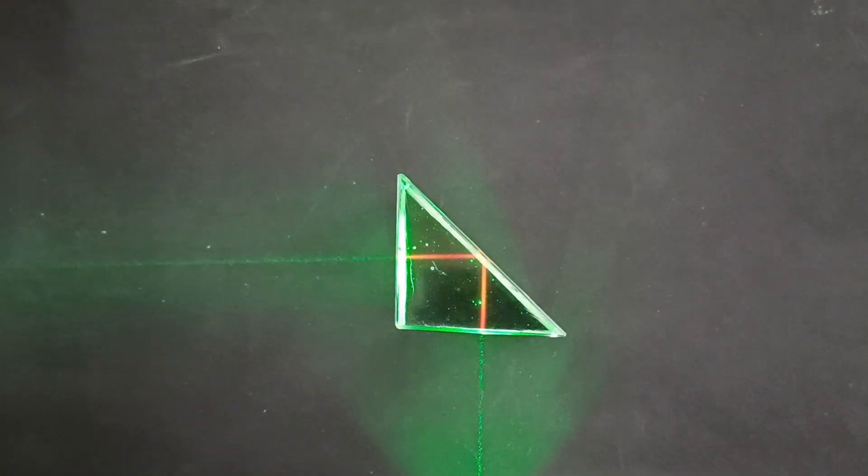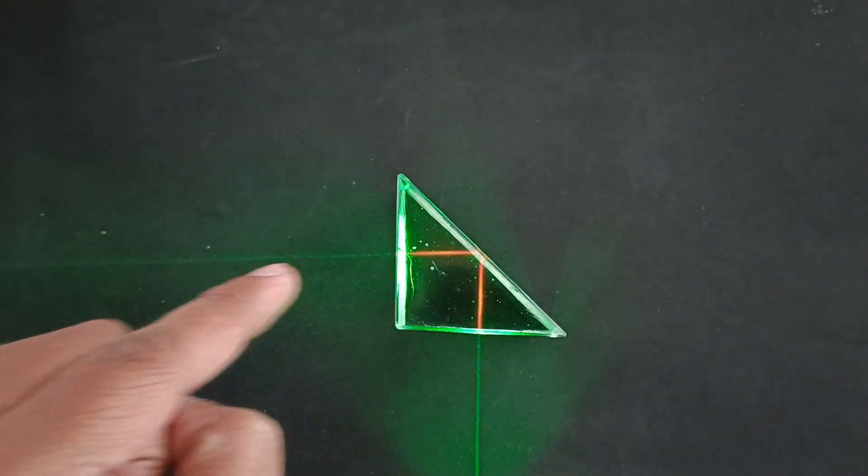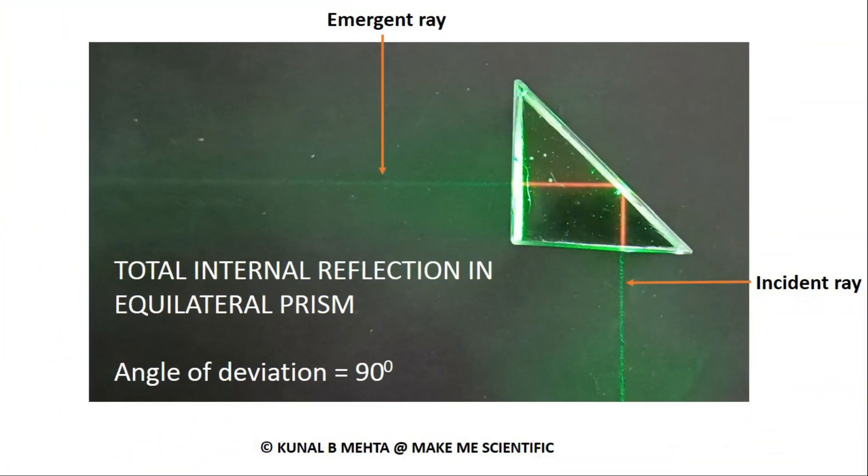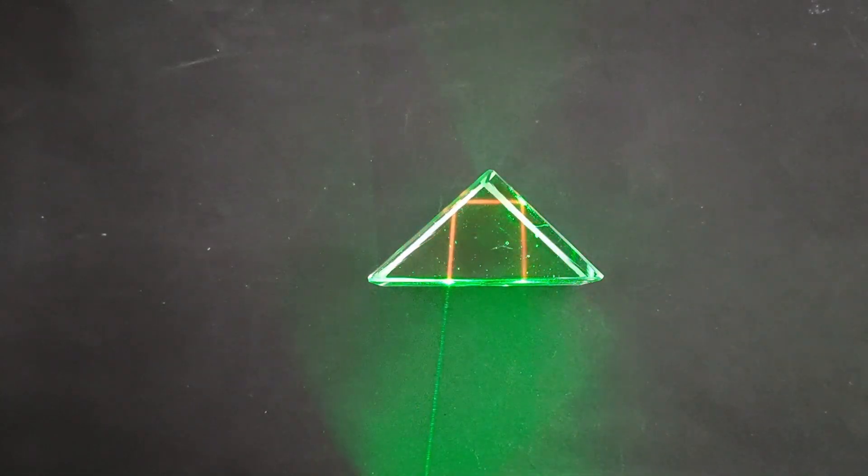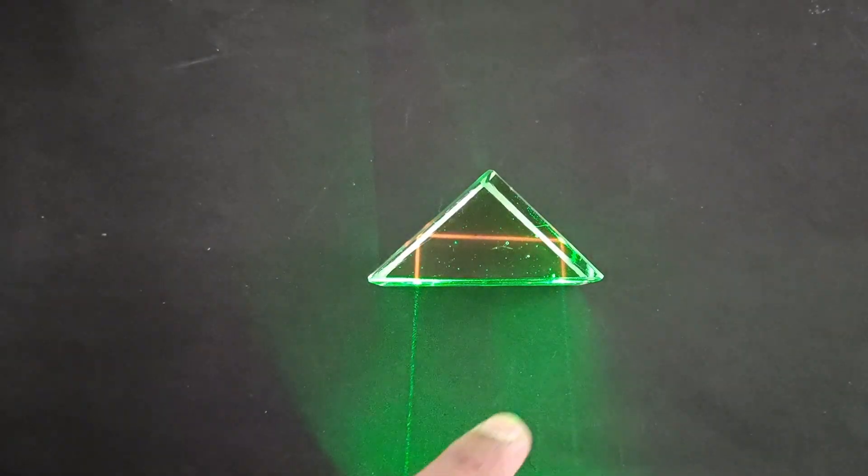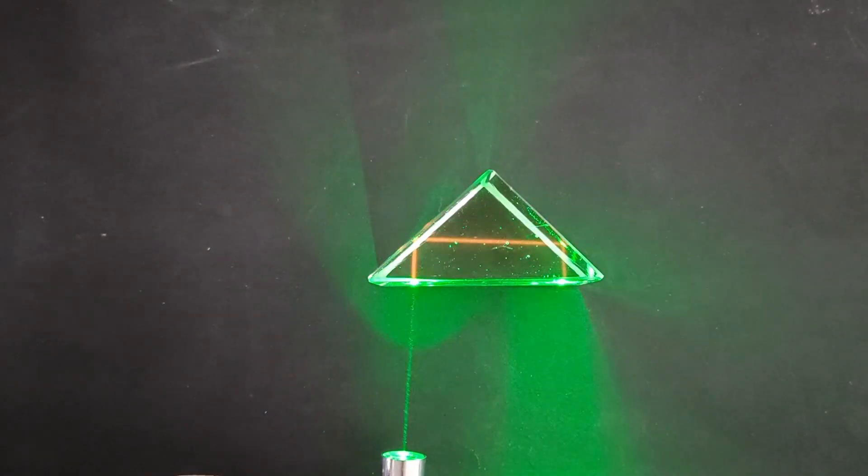Amazing view - prism action at its peak. Total internal reflection happening again, ray deviates by 180 degrees.